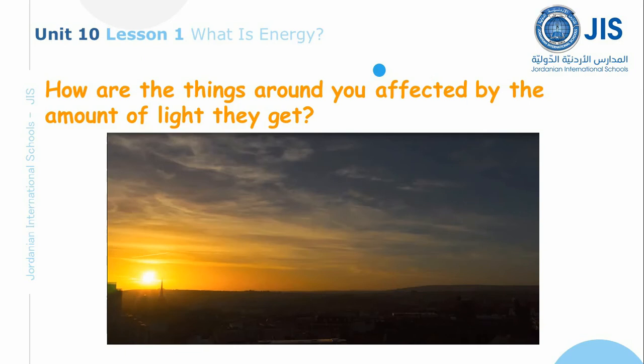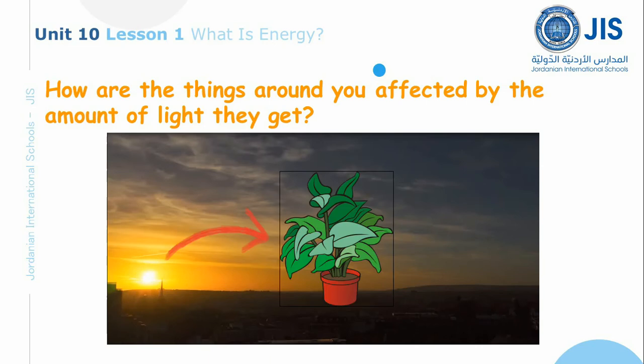How are the things around you affected by the amount of light they get? The amount of light can affect how well you can see things. A plant might not grow as much if it doesn't get much light. Now we're going to watch a video to see how the amount of light can affect how well you can see things.